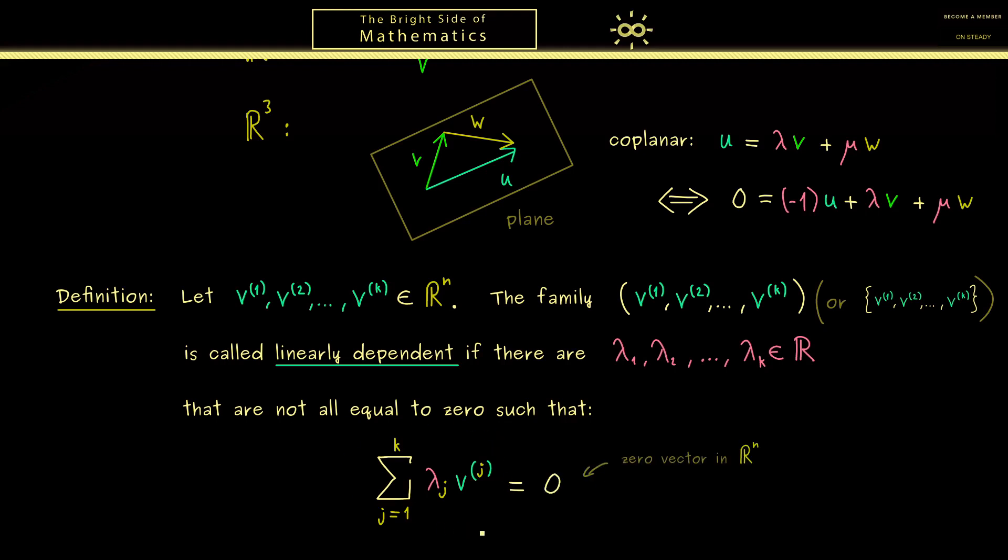So you see, linear dependent just means that we have a loop of vectors that brings us back to the start. Or in other words, it means that some vectors can be described by the other ones.